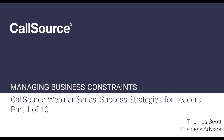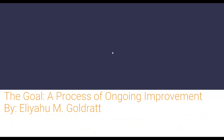At the end of the presentation please feel free to ask questions, and we are going to be recording this — the recording will be available to you once we finish today. So today we're going to be looking at managing business constraints. This concept wasn't actually my idea — giving credit where credit's due, it was originally presented in a book called 'The Goal: A Process of Ongoing Improvement' by Eliyahu M. Goldratt. This book provides insight into the constraints faced by a manufacturing company, but the concept can be applied to your business as well.